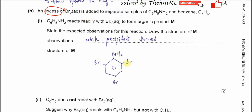Because bromine is in excess and the amine group is electron donating, it directs substitution to the 2, 4, and 6 positions. All three of those positions will have bromine substituted in. This forms 2,4,6-tribromophenylamine, which appears as a white precipitate after phenylamine reacts with bromine water.